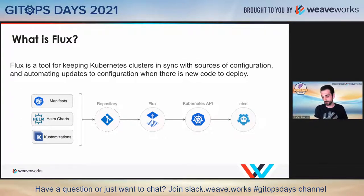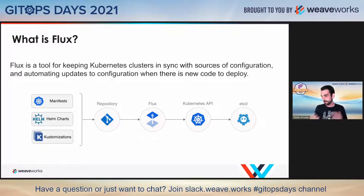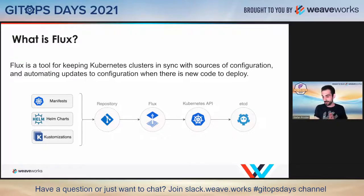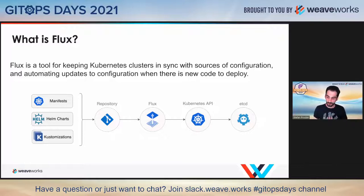The whole idea is quite simple. You define your cluster state in a Git repo, an S3 bucket, or something like that, and you install Flux on your cluster. Then you tell Flux to keep your cluster in sync with whatever changes are made into the source, be it a repo or an S3 bucket.